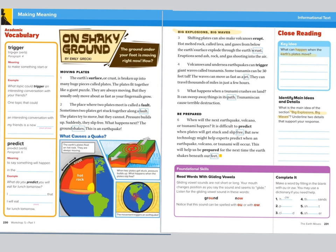So I'm looking at the diagram: "What causes a quake? The earth's plates float on hot rock. They are always moving." And I'm looking at the crust and the hot rock in the earth. When two plates get stuck, pressure builds up and then the plates slip free. So I'm looking at the diagram to see how they rub together.